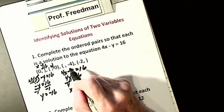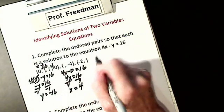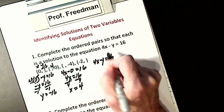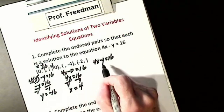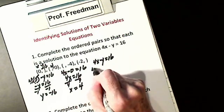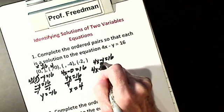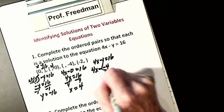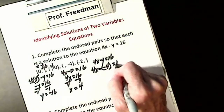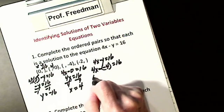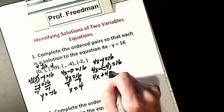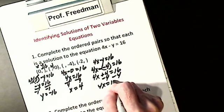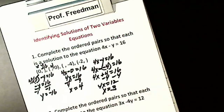The next one says y is negative 4. This is the one people get wrong because of the sign. I have 4x — the minus is from the equation — and y itself is negative 4, so you get a double negative. So I get 4x plus 4 equals 16. Subtract 4: 4x equals 12. Divide by 4: x is going to be 3.